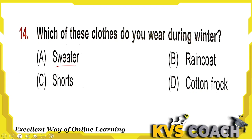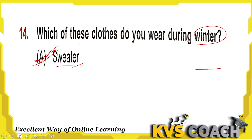Next: which of these clothes do you wear during winters? A sweater is a warm cloth so we wear it in winters. A raincoat is worn in the rainy season — it is waterproof but not warm. Shorts and cotton frocks are worn in summers. So the cloth we wear in winters is a sweater. Option A is the right answer.